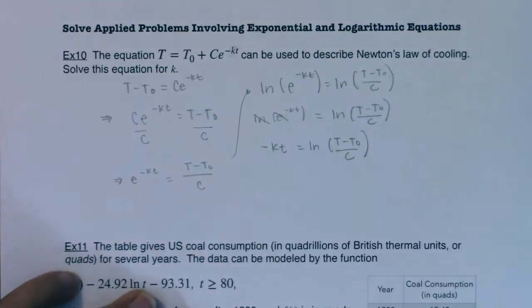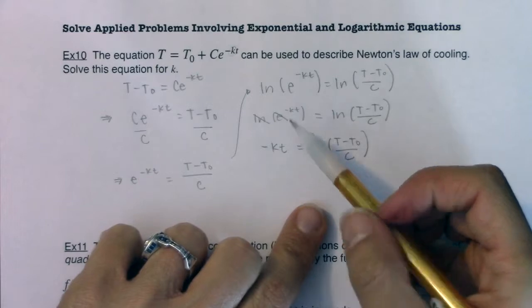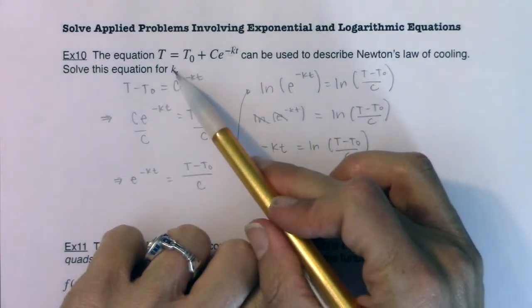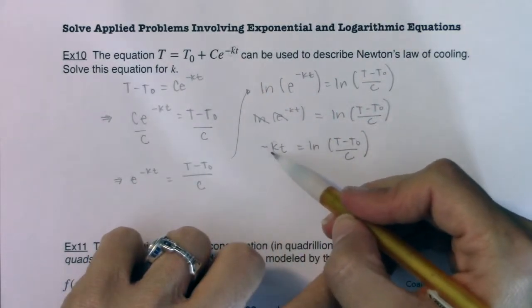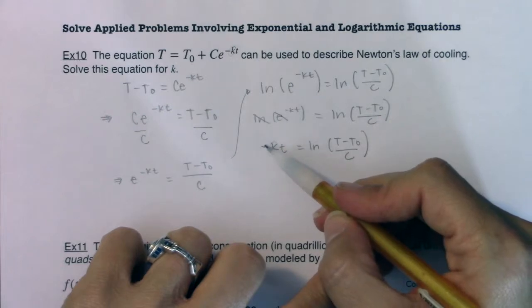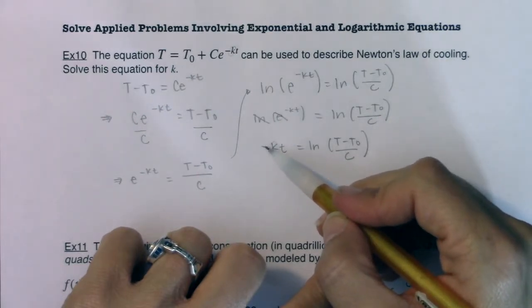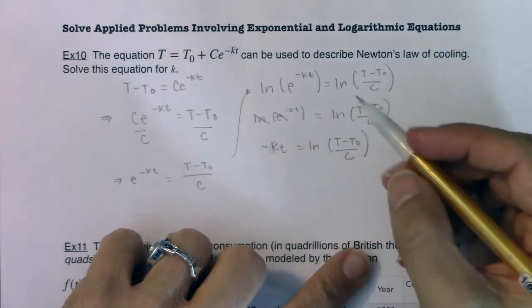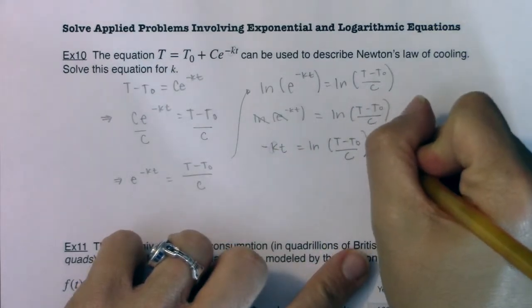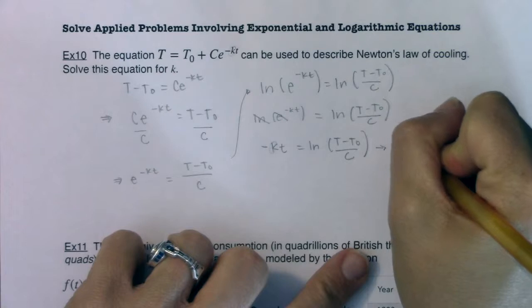And I'm getting so close to the answer. Again, my directions were to solve for K. So if I want to isolate this guy, I have negative 1 times K times T. How do I undo a multiplication by negative 1 and a multiplication by T? Well, I'm going to divide both sides by negative T.